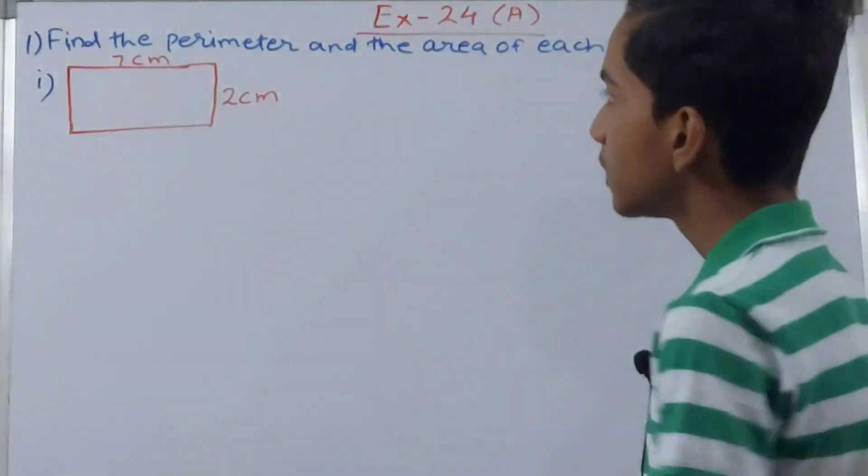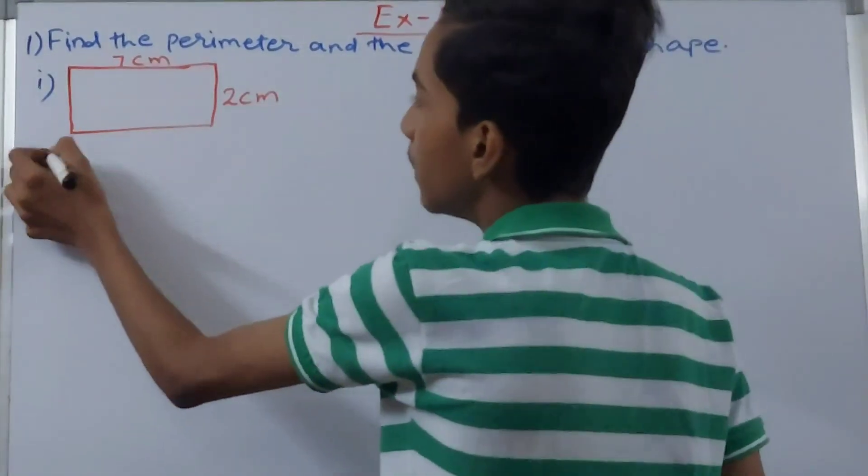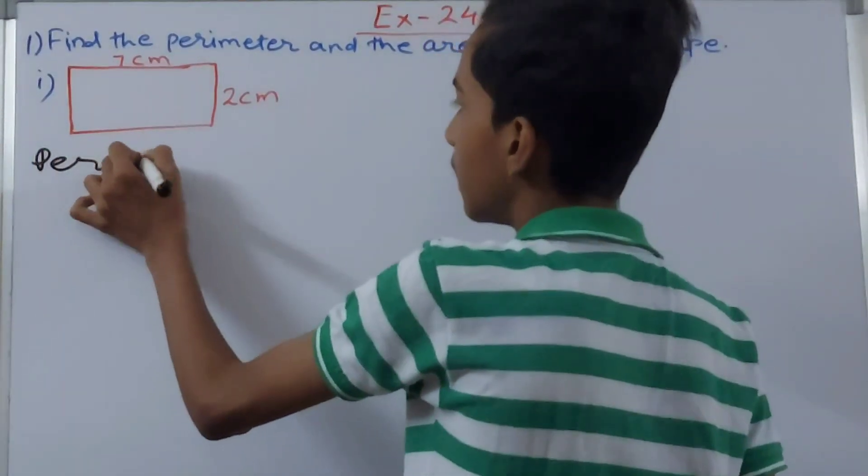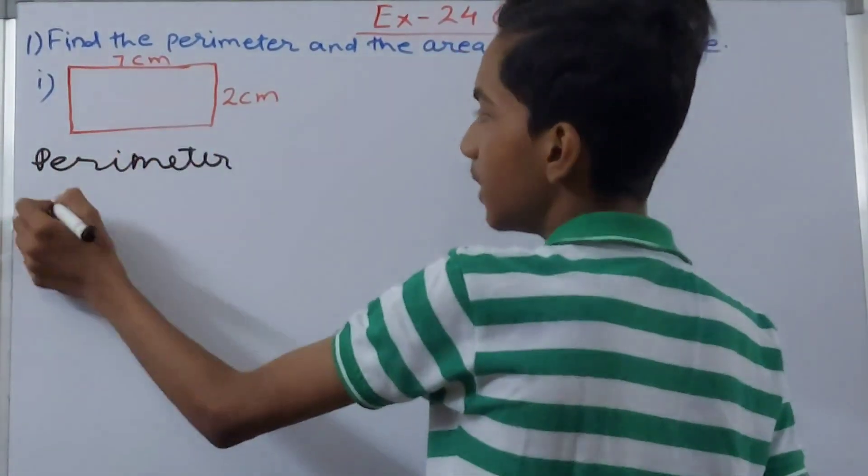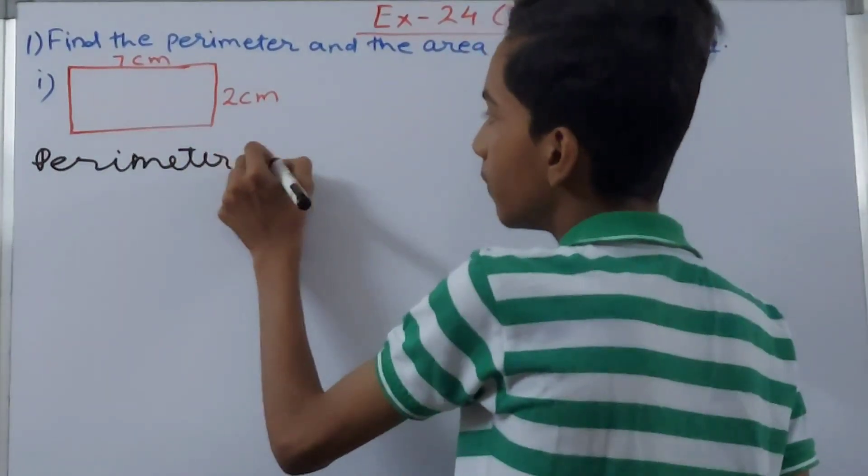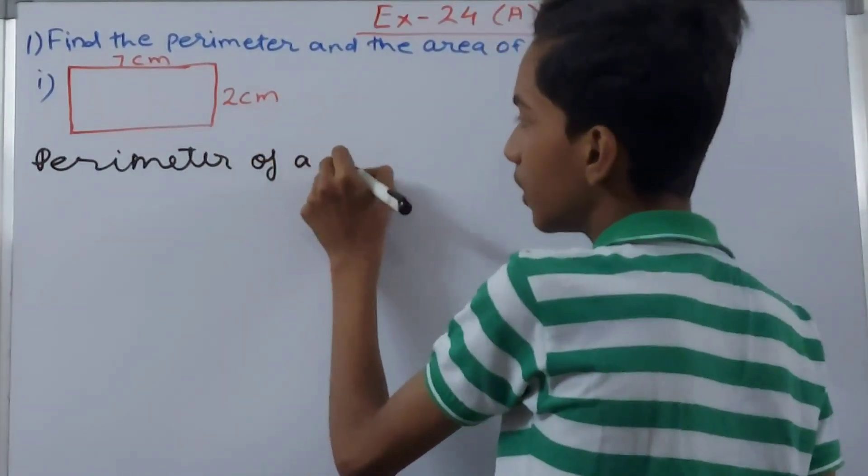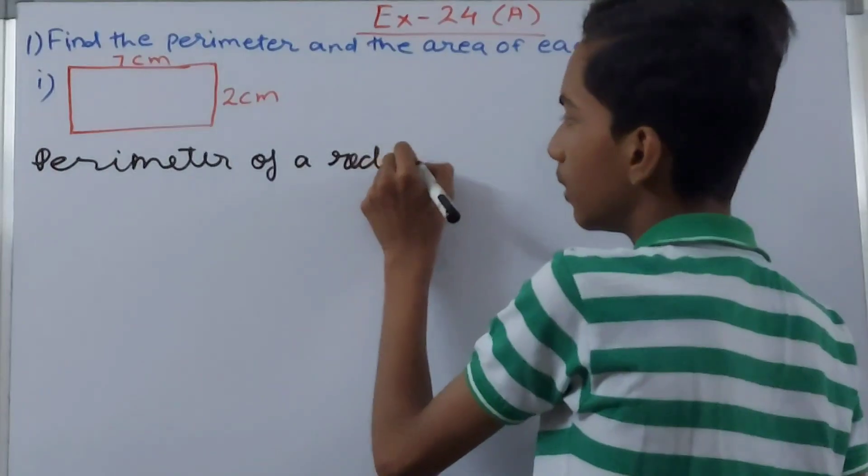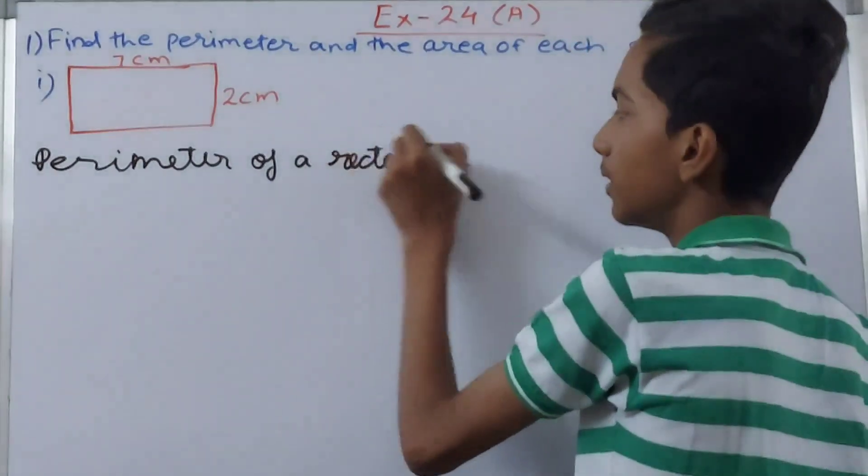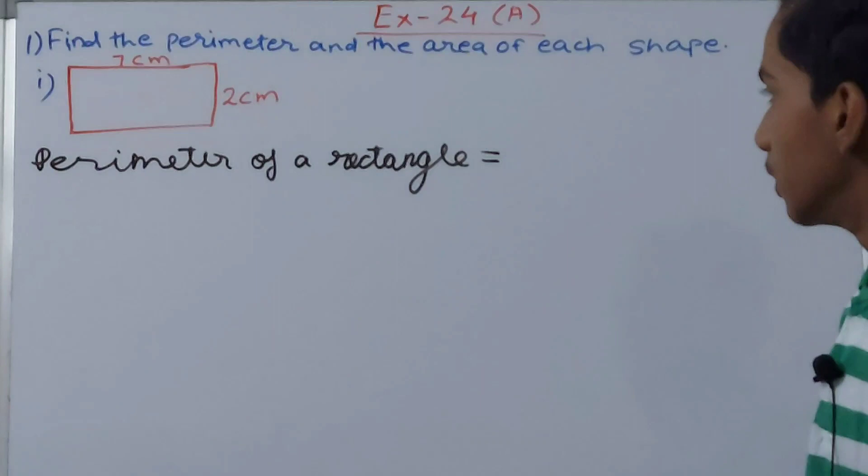So first of all we will calculate the perimeter. What will the perimeter be? What is this figure called? Rectangle, where two opposite sides are equal.